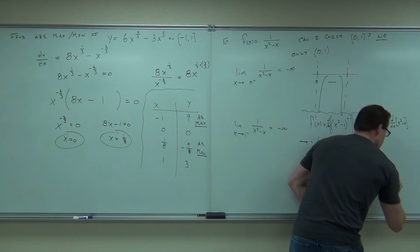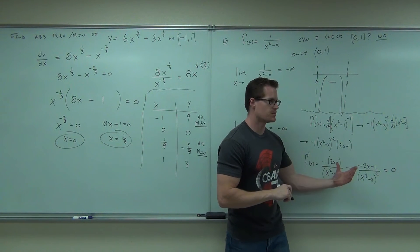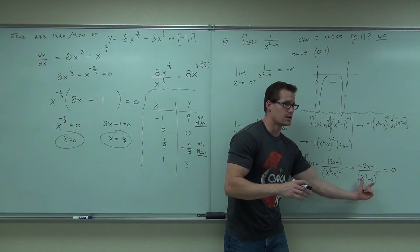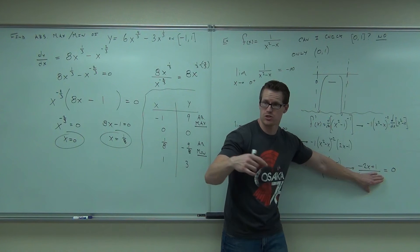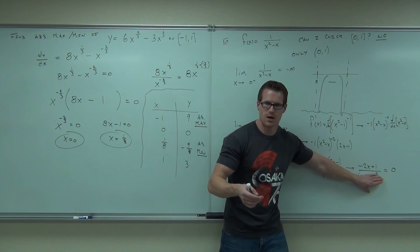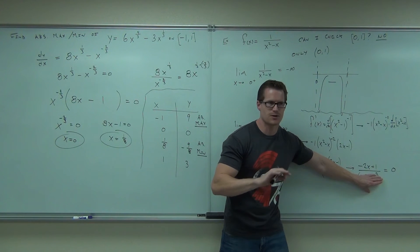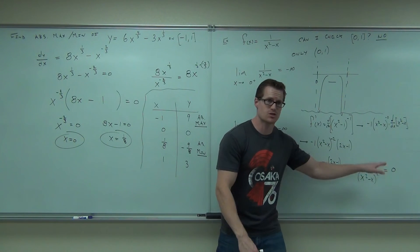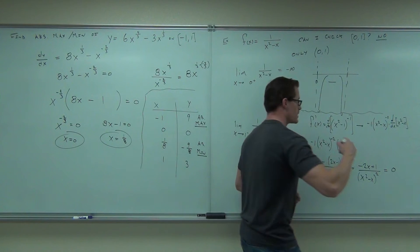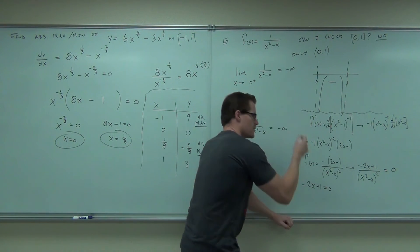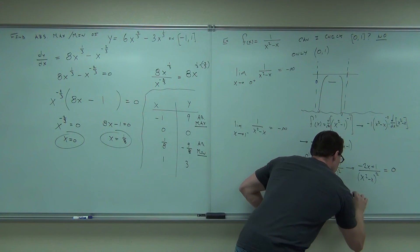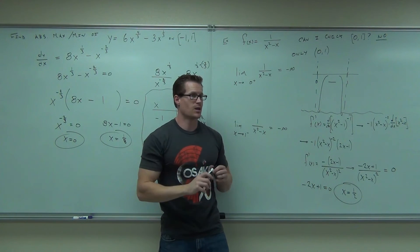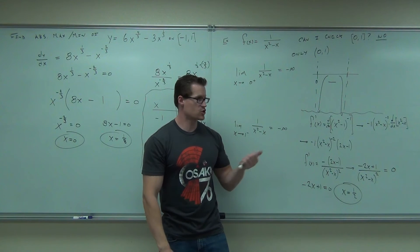Now even though that looks really nasty, think about something: where could this possibly be equal to zero? It's not where the denominator equals zero because that's going to give you undefined points - that's just going to be zero and one again. So the only place it's possible to be equal to zero is where the numerator equals zero. When you're solving rational equations like this, you just have to set the numerator equal to zero, and in this case is very easy. You're going to get negative 2x plus 1 equals 0. Subtract 1, divide by negative 2: x is one half. How many people feel okay getting x is one half? All right, x equals one half. Is that in our interval? Check that. That's in our interval.